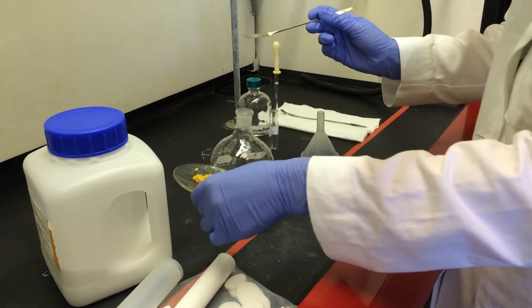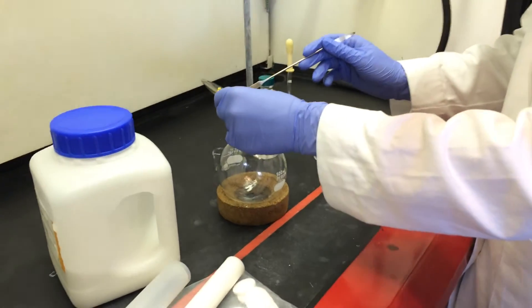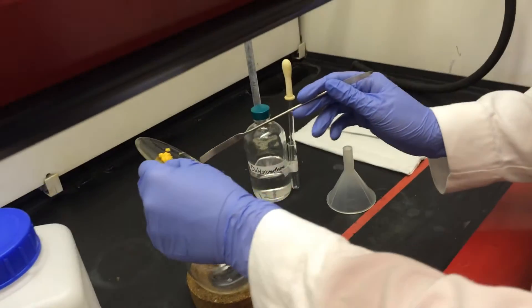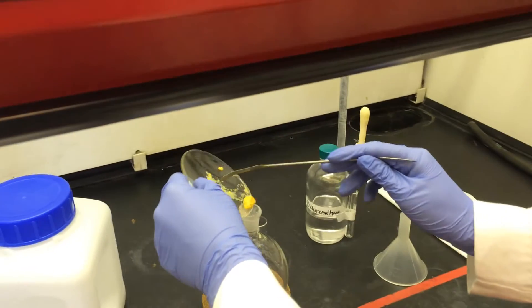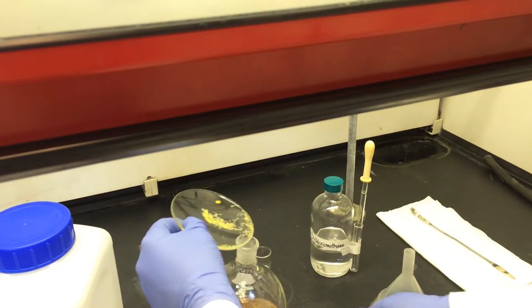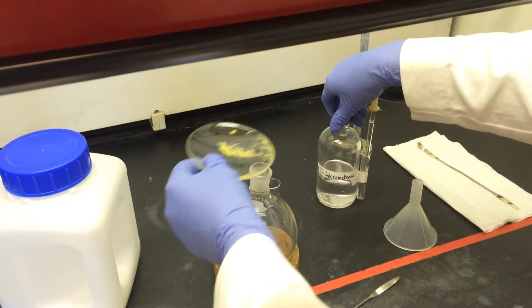Okay, so first you want to get your sample into a 500 milliliter round bottom flask and use dichloromethane to get off any excess.